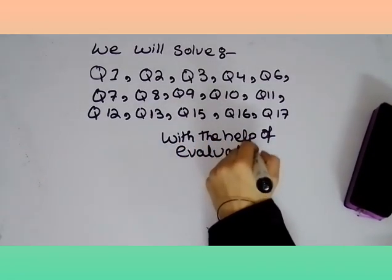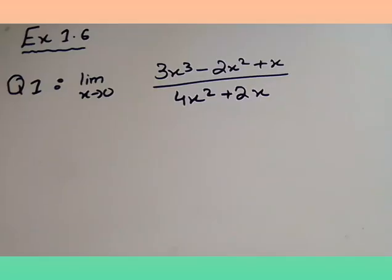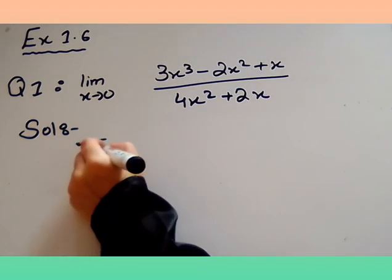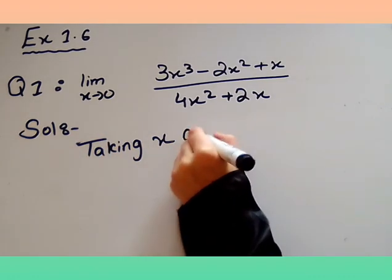So question number one we have here is limit x→0 of (3x³ - 2x² + x) divided by (4x² + 2x). The first step we are going to do here is taking x common from both numerator and denominator.